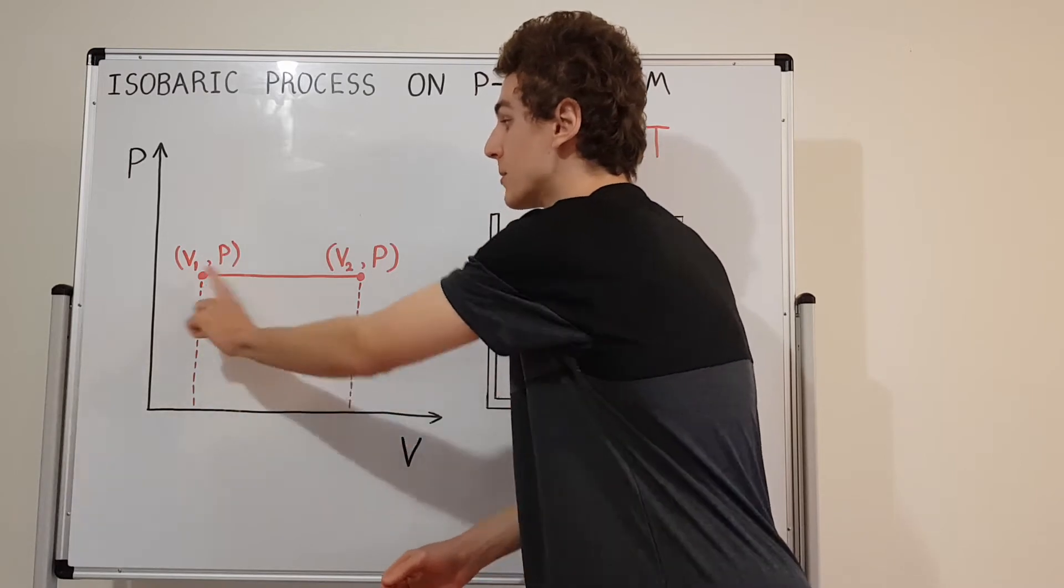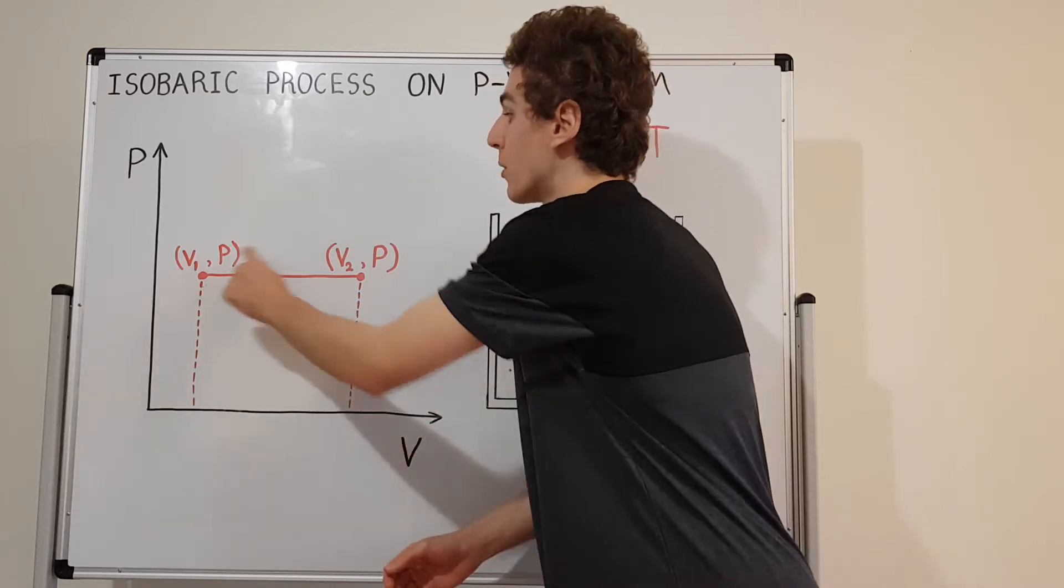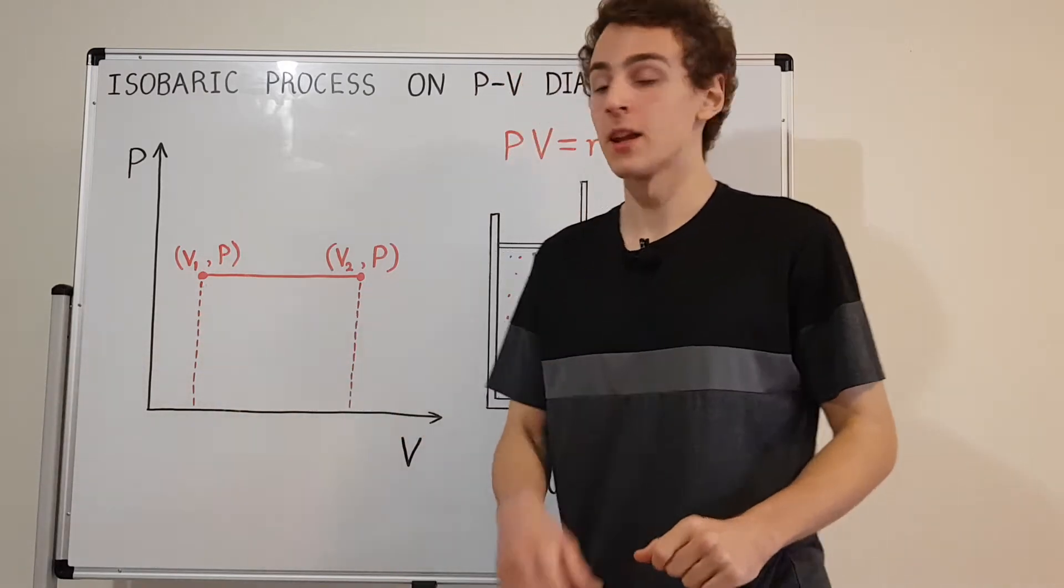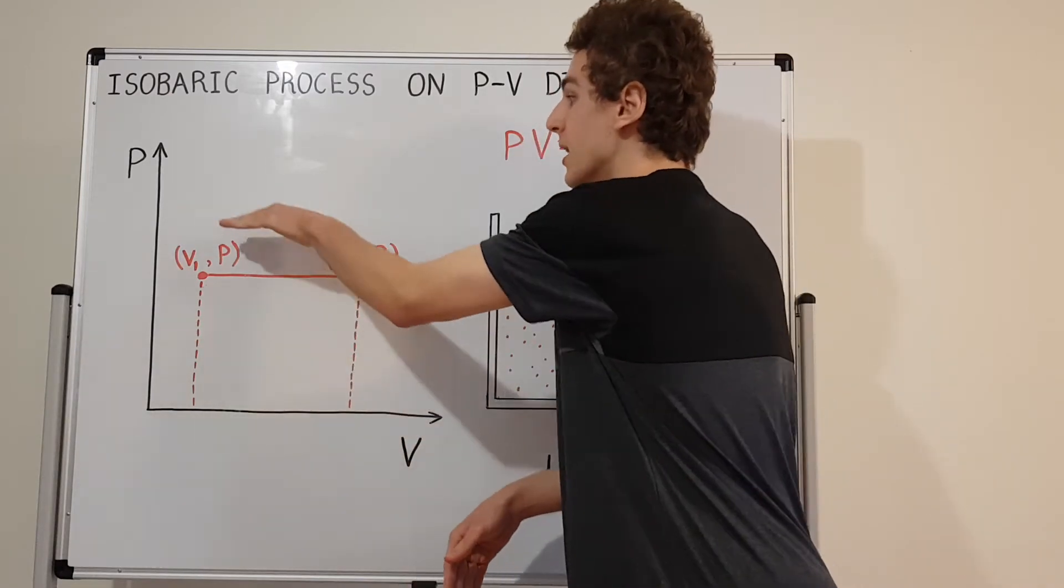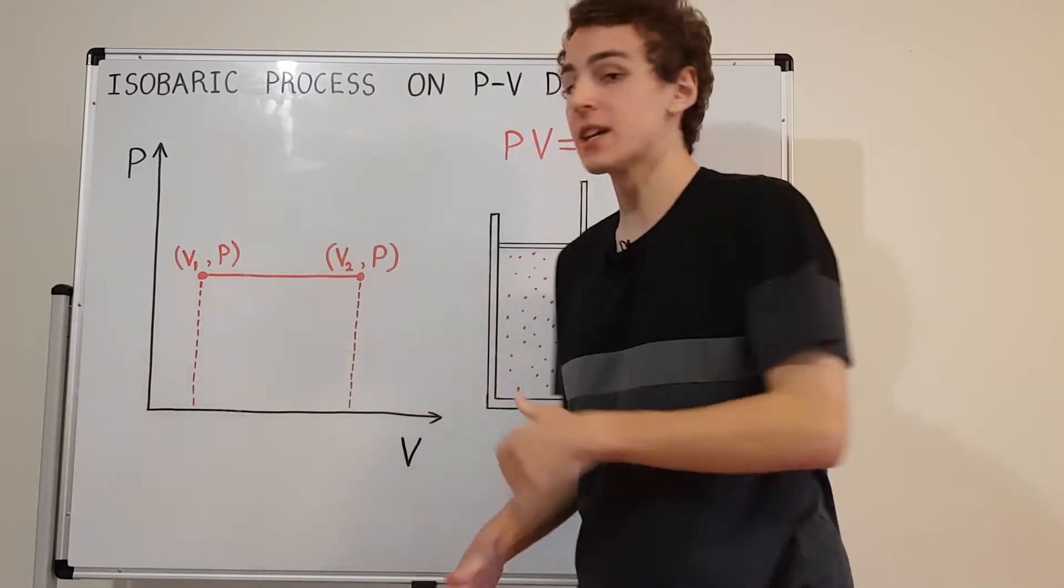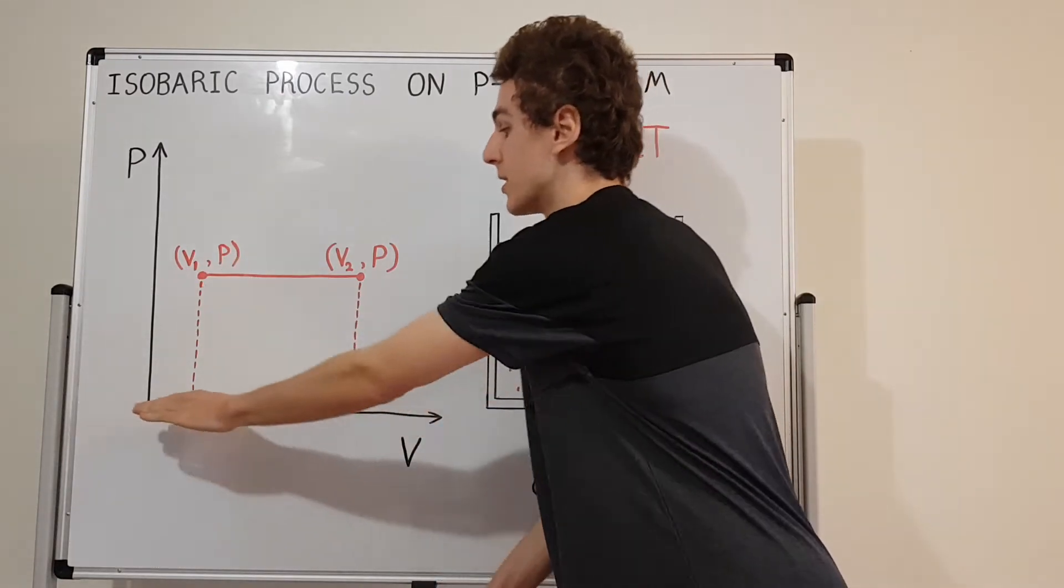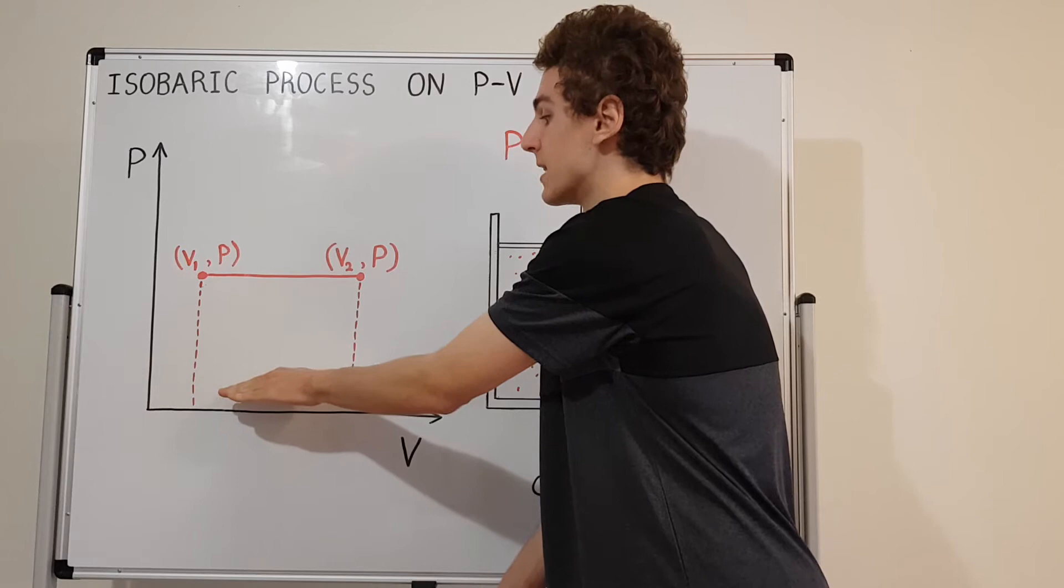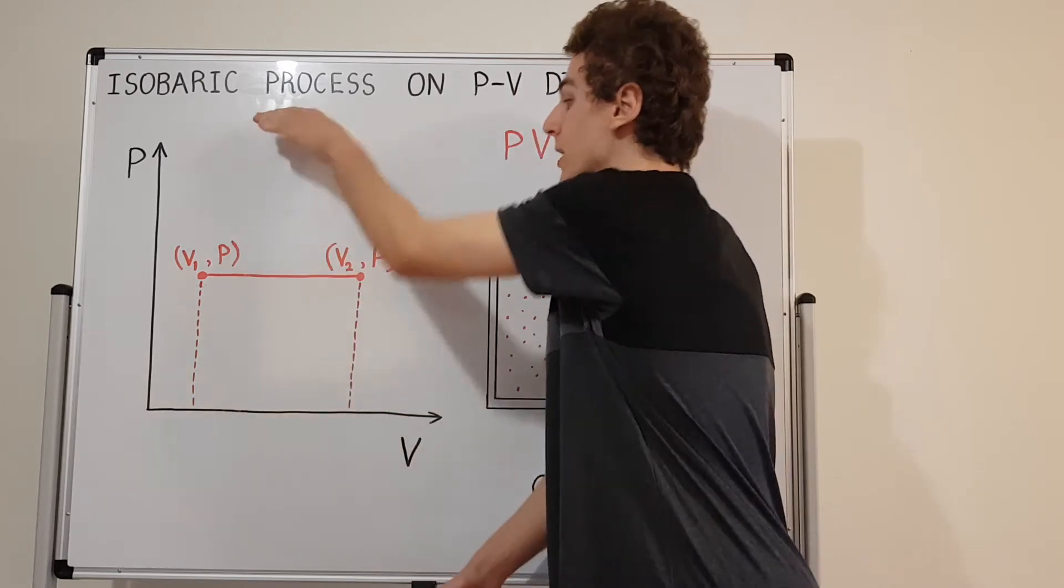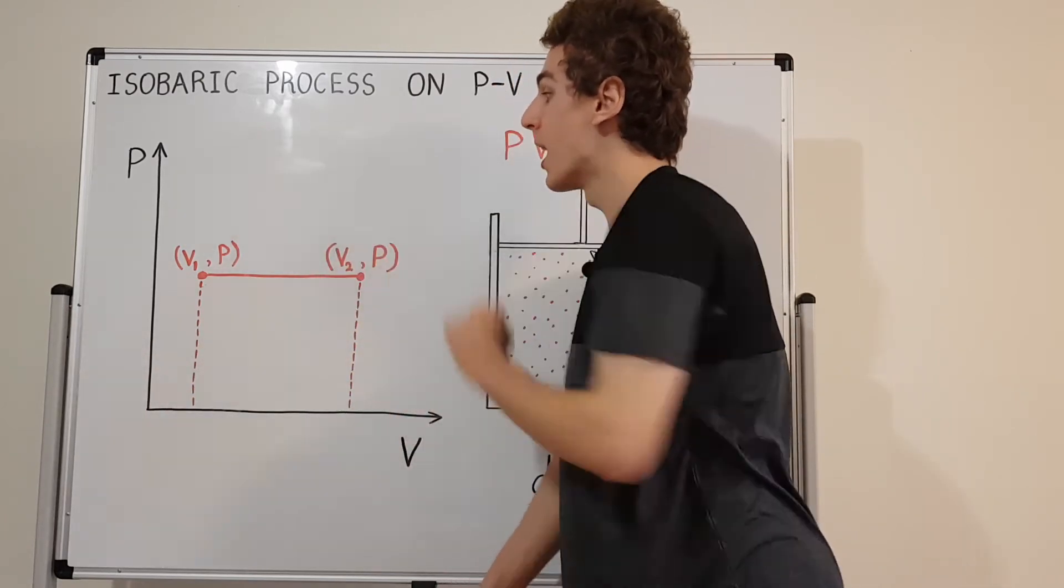The volume is different—the volume is free to change, but the pressure is fixed. Any horizontal line is an isobar, just at a different pressure. Lower pressures are horizontal lines closer to the horizontal axis, and lines further away have higher pressures.